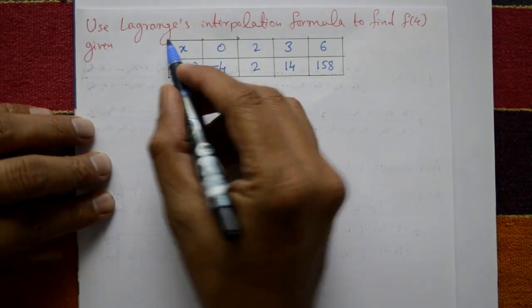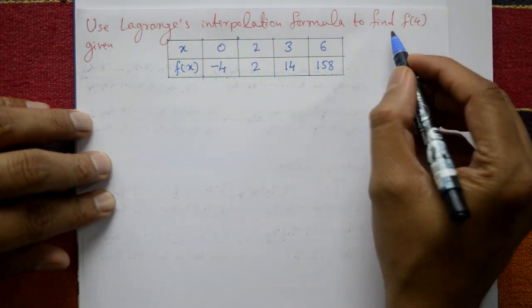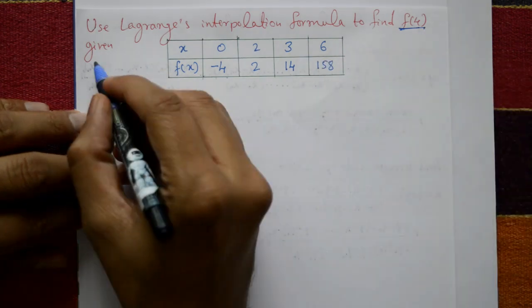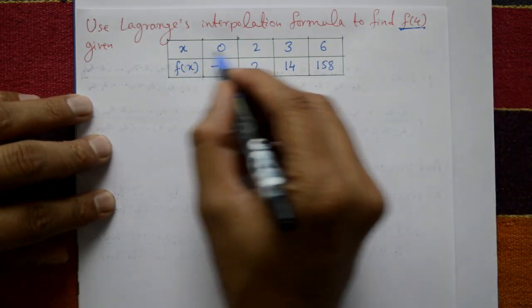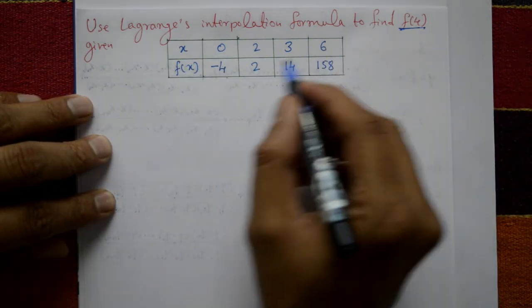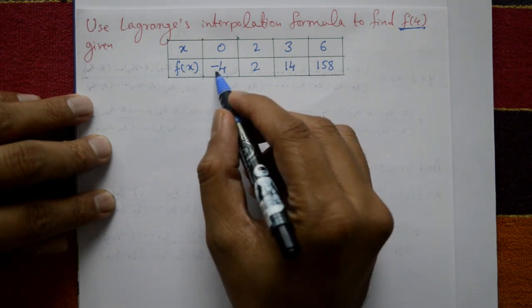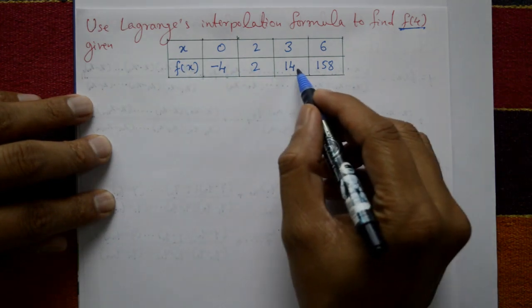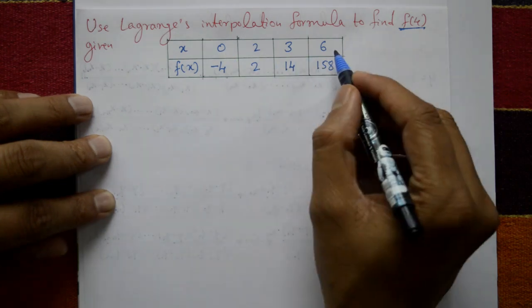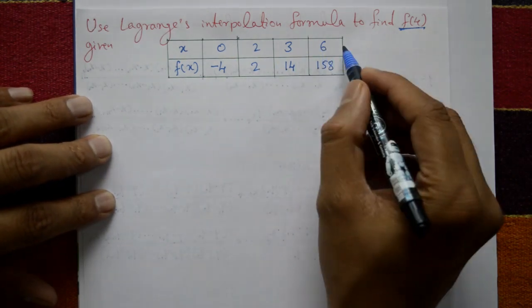Use Lagrange's interpolation formula to find f(4). Given x values are 0, 2, 3, 6 and f(x) — meaning y values — are minus 4, 2, 14, 158. These x values are not equidistant, i.e., unequal spacing.